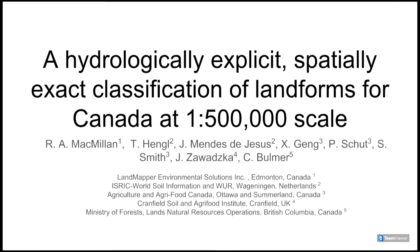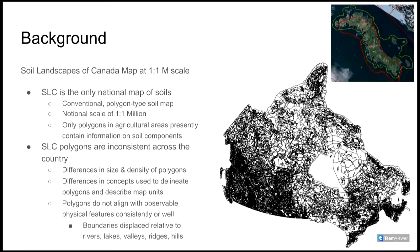Good afternoon everyone. This is Bob McMillan presenting remotely from Canada. Today I am pleased to give you a brief introduction to some work our group has been doing to create a hydrologically explicit spatially exact classification of landforms for Canada at 1:500,000 scale.